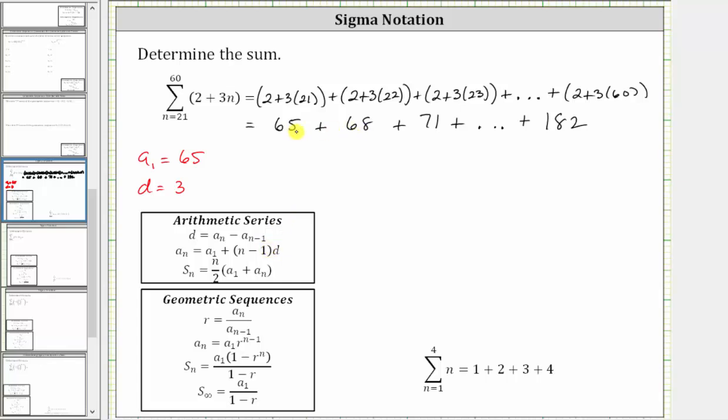Notice 68 minus 65 is three. 71 minus 68 is also three. And we know the last term in the series is 182 and therefore a sub n is equal to 182.